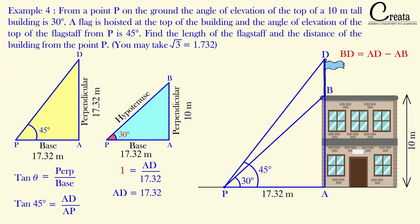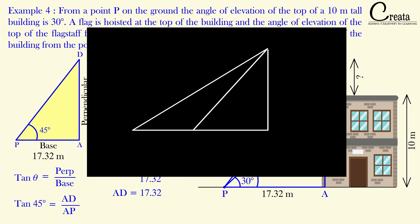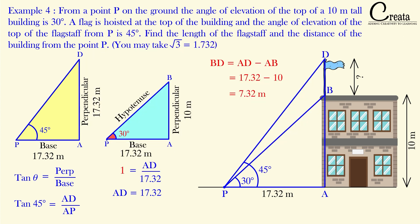We have to calculate BD (height of the flagstaff): BD = AD − AB = 17.32 − 10 = 7.32 meters. The length of the flagstaff is 7.32 meters. This type of question may appear in the real exam — two triangles sharing a common base. You can equate the trigonometric output of both triangles since one side is common. Similarly, if the perpendicular is common, you can use the same approach with the perpendicular as common.